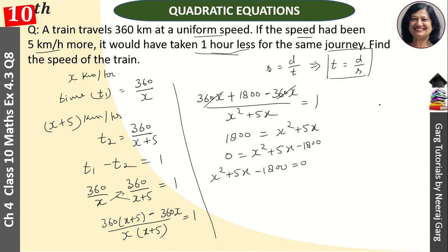Now, we will make this factors. 1800, x square into minus 1800. We will make factors of minus 1800 which will sum to 5x. See, this is a little bit tough. You have to focus on this. If you have a problem, you can solve it with quadratic formula.